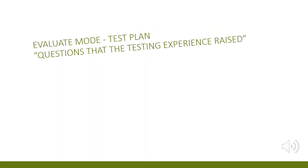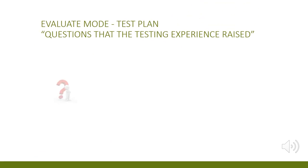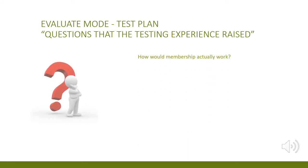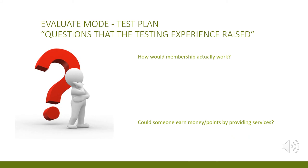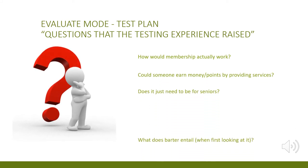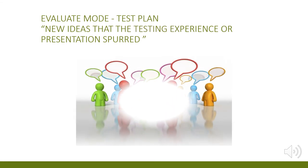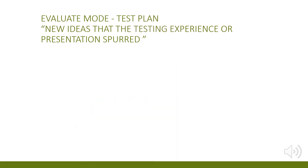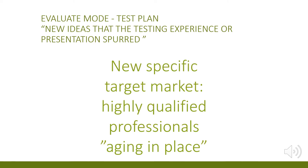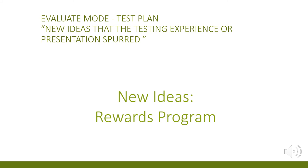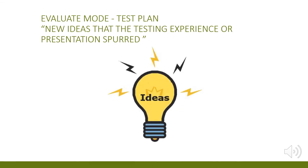The third category encompassed all questions raised by the test user — for example: how would membership actually work? Could someone earn money or points by providing services? Does it just need to be for seniors? What does barter entail? What does pet finder mean? Our last category contained all new ideas generated from interviewing the test user: some mentioned how the service could work for other demographic groups, some suggested adding carpooling services, others identified a new target market of highly qualified professionals aging in place, and others suggested building up points for volunteering that could be utilized towards future value. Overall, we received great new ideas.